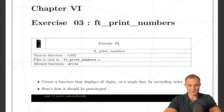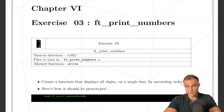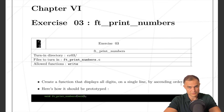Let's go on with the following exercise: print numbers. We can use only the write function, and we have to create a function that displays all digits on a single line in ascending order. We are still dealing with characters and the ASCII code, so you already know how to do it. I highly suggest you try it yourself first, then watch my solution.